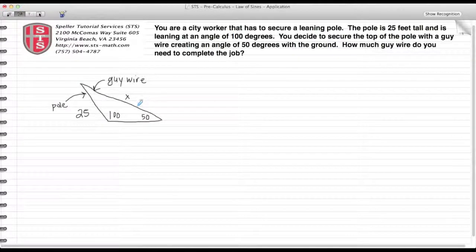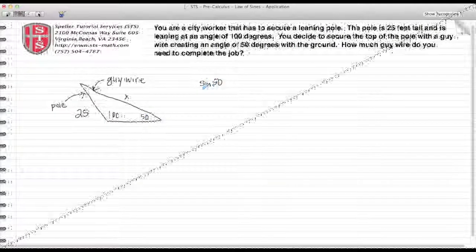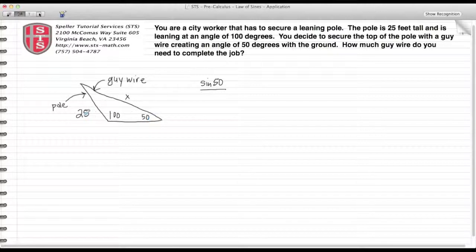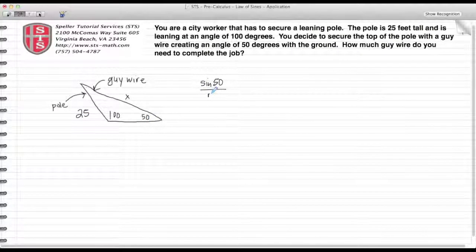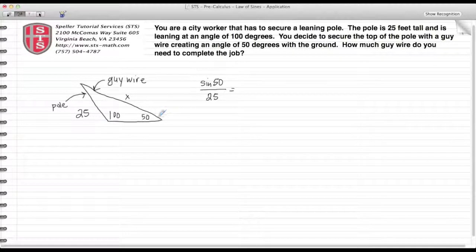Alright, with these facts we're going to use the law of sine to figure out the length of side X. We're going to start off by taking the sine of 50 and divide that by its opposite side which has a length of 25. We're going to set that equal to the sine of 100...